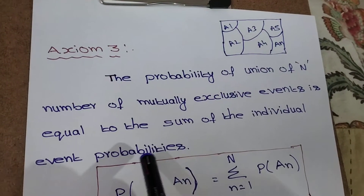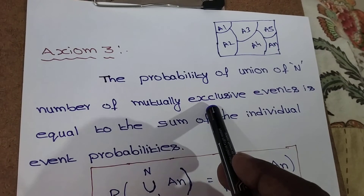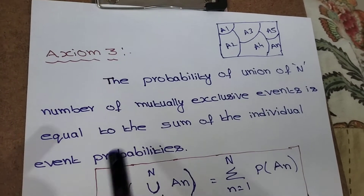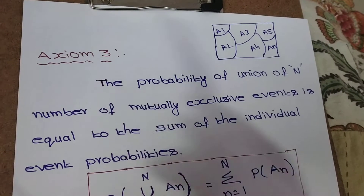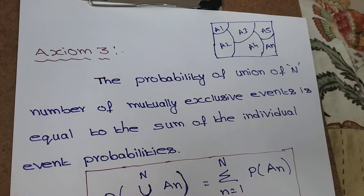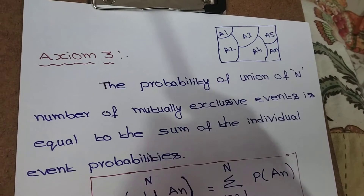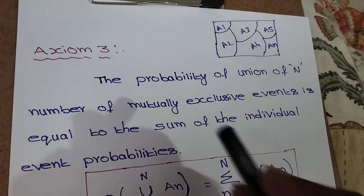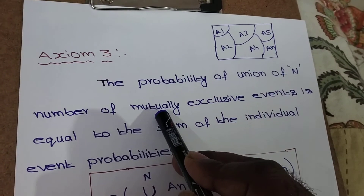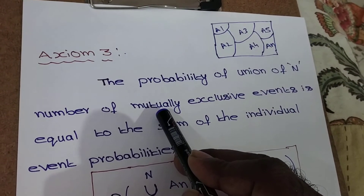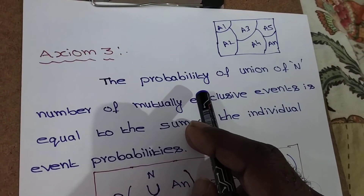Next, axiom 3. The probability of a union of N number of mutually exclusive events is equal to the sum of the individual event probabilities. Mutually exclusive events means all the events are disjoint. Suppose there are N events, where N equals 1, 2, 3, up to N.